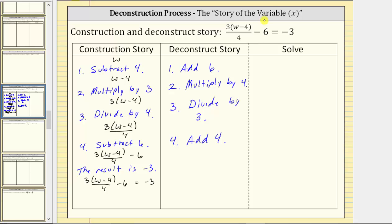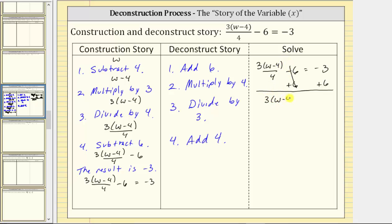Beginning with the original equation, the first step is to add six to both sides of the equation. Now we simplify both sides. On the left, minus six plus six simplifies to zero, giving us three times the quantity w minus four divided by four. On the right side, negative three plus six is three.